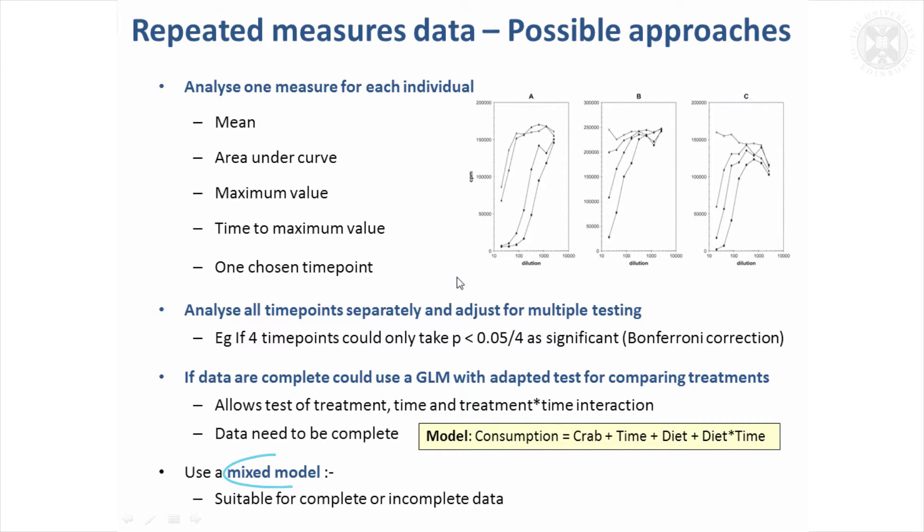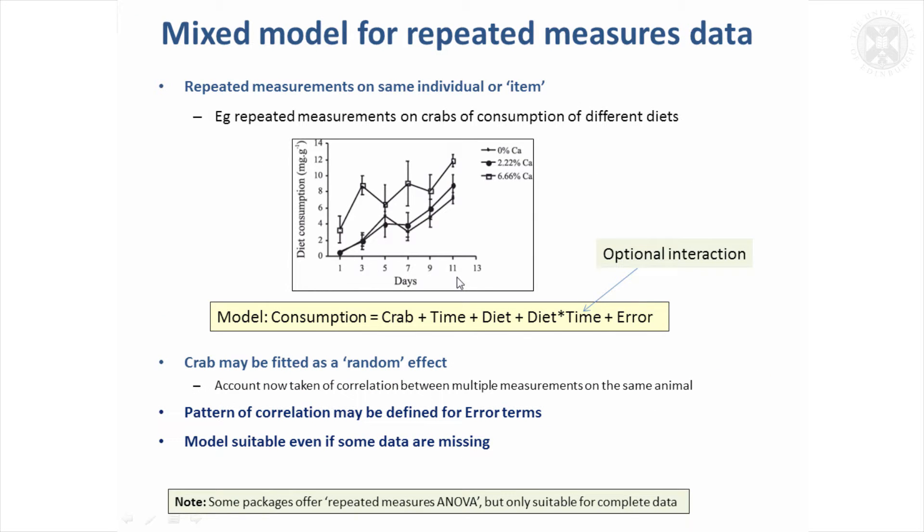What I'm going to suggest is the mixed model is suitable for either incomplete or complete data, and it has the advantage that you can allow for patterns of correlation between the measurements. The model would look something like this with an optional interaction for that crab data, but you would definitely want to fit crab as a random effect. It also offers the option of having a pattern of correlation defined for the error terms, so observations closer together might be more highly correlated than other observations. You could set it up to say observations that are more than three time points apart are not correlated at all.